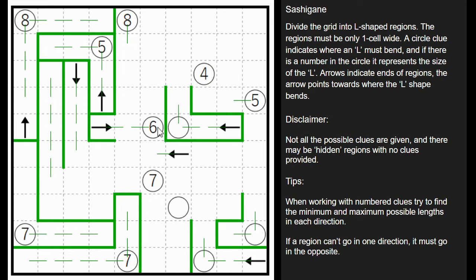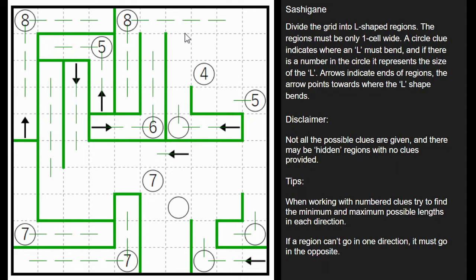This six can't go down — it would run into this arrow region — so it has to come up: one, two, three, and it needs to come up three, four, five, six. We've completed that L. This eight is forced to hit all of these cells: one, two, three, four, five, six, seven, eight, so it comes over like that. This seven can't go up — we'd run into this region — and going all the way down one, two, three, four, five, six doesn't leave enough space, so it has to come down.